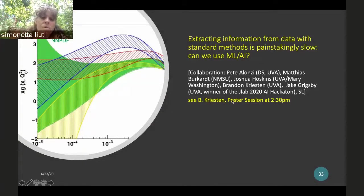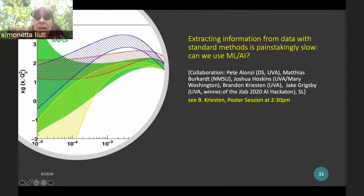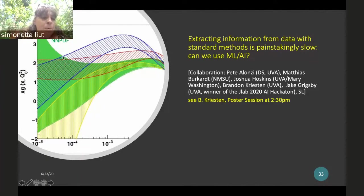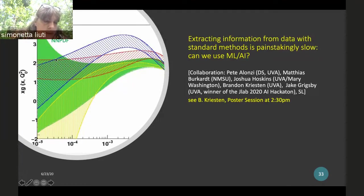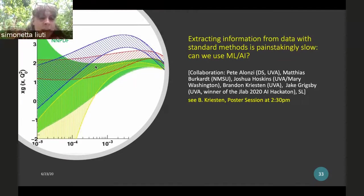Here are some results: the real part of E shown in blue dots extracted from data, compared with Kumerichky and Mueller's evaluations from their neural network extraction analysis. Extracting information from data with standard methods is painstakingly slow. This is where we started collaborating with data science at UVA, with Matthias Woerker also joining our effort.